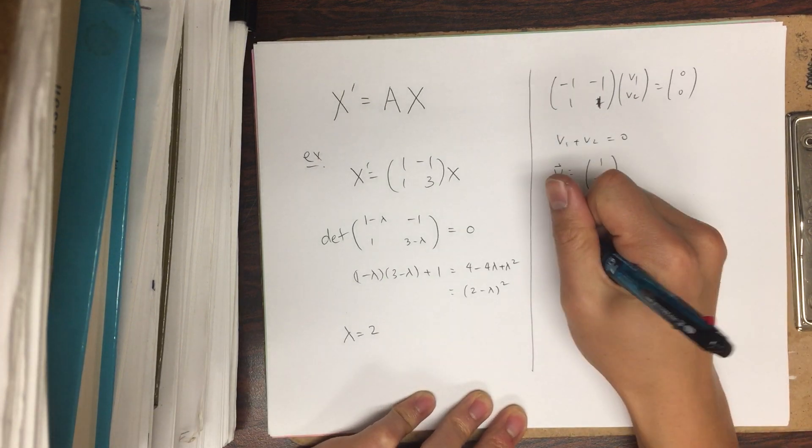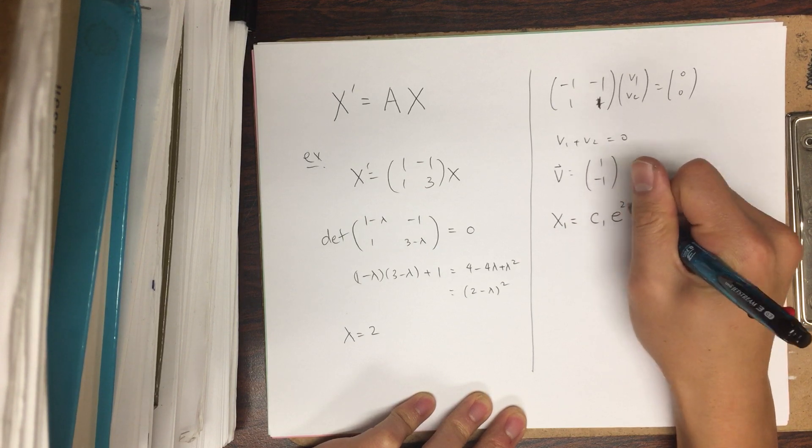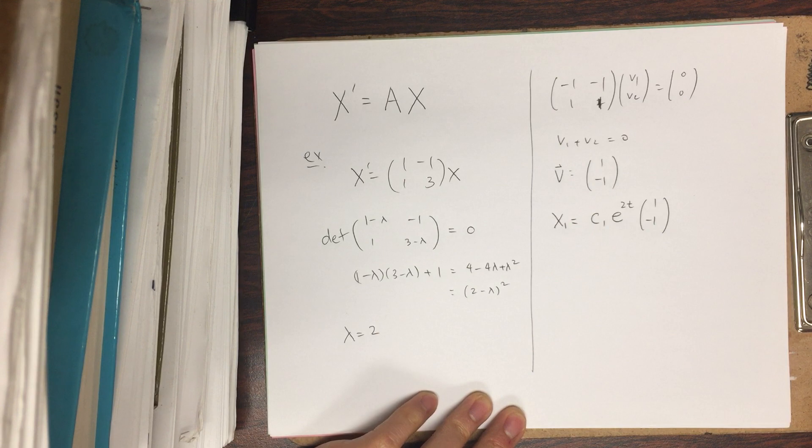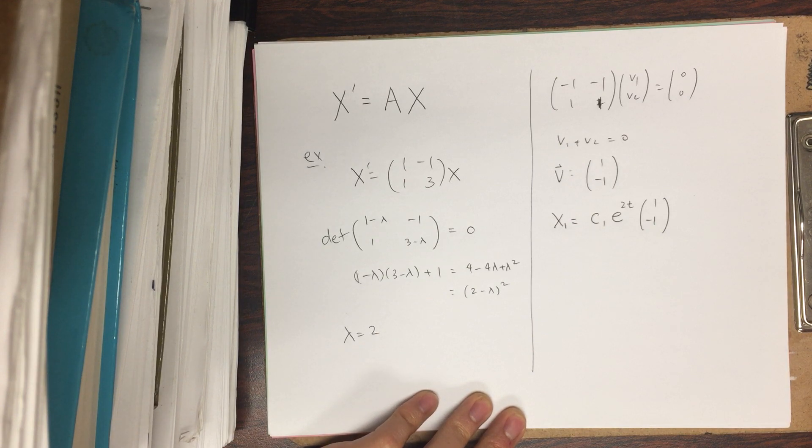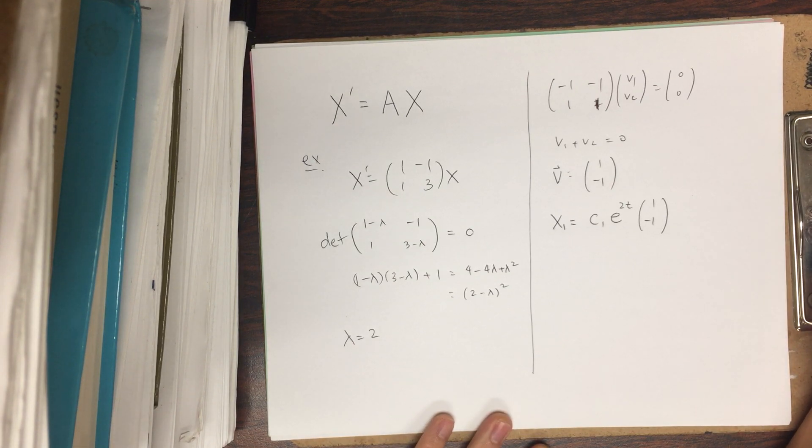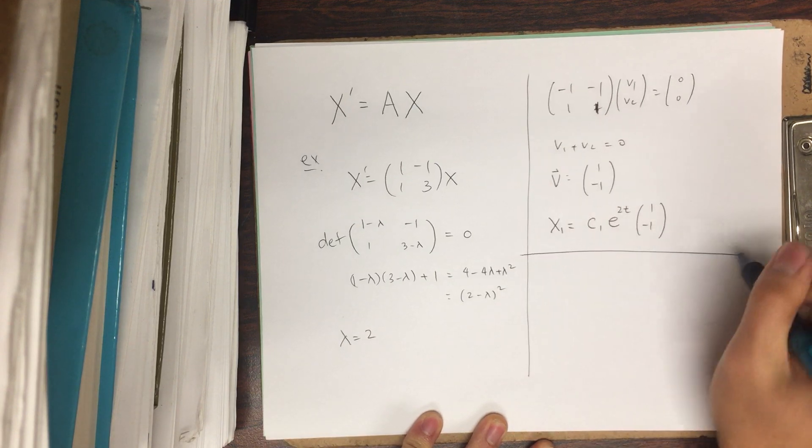So one solution is given by c1 e^(2t) [1, -1]. But this is a 2 by 2 so we need another solution.